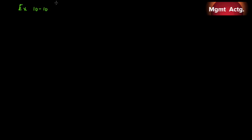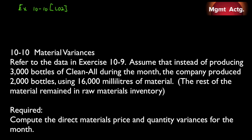Exercise 10-10, learning objective 2, material variances. Refer to the data in exercise 10-9. Assume that instead of producing 3,000 bottles of Clean All during the month, the company produced only 2,000 bottles using 16,000 milliliters of materials. So now we have inventory: we purchased 20,000 but only used 16,000, leaving inventory of 4,000 milliliters. Output changes from 3,000 to 2,000 units.